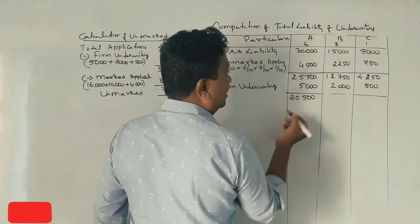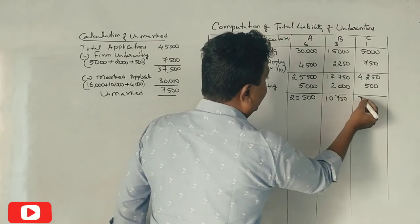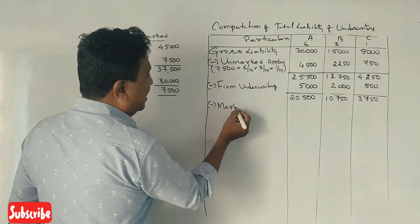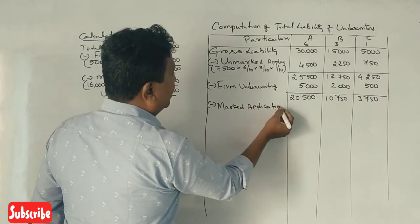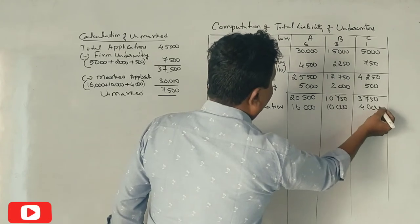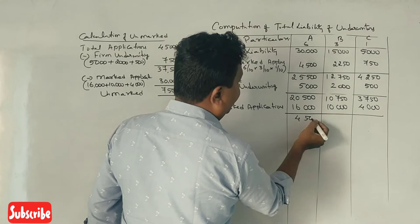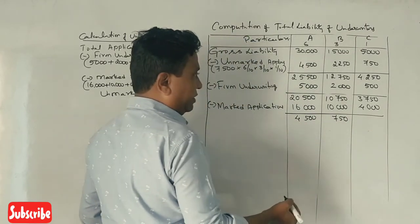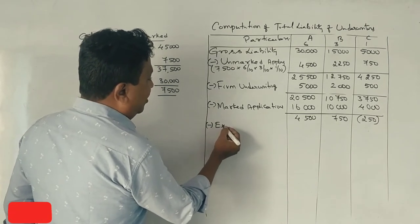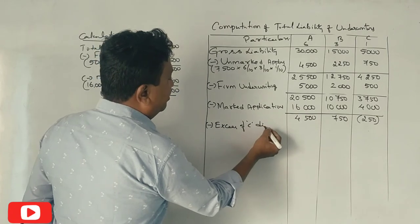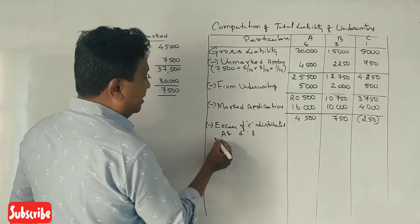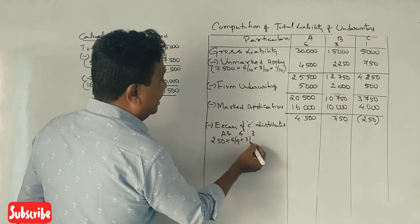Now, what is the marked? Market applications: 16,000, 10,000, 4,000. Correct? 4,500, 7,500. Total 20,500, 12,750, 3,000. Correct?